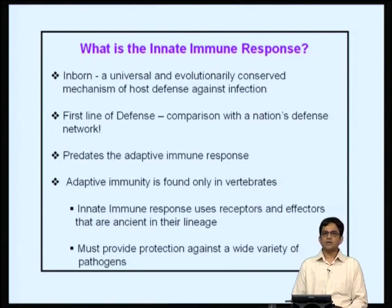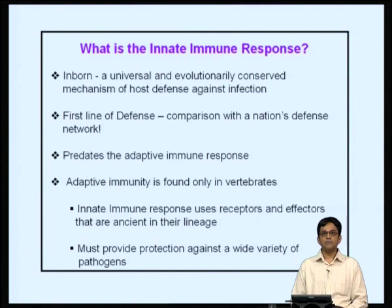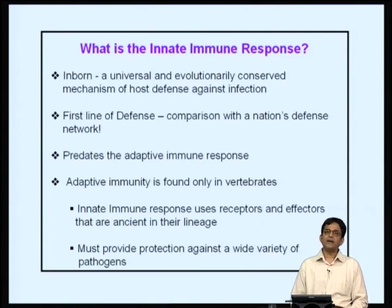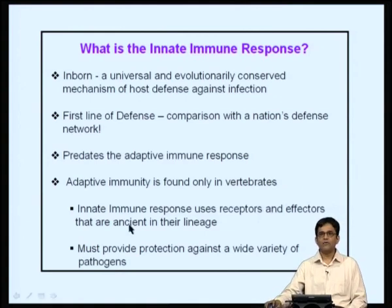The innate immune response predates the adaptive immune response, meaning it is evolutionarily conserved and is present in lower organisms — something the adaptive immune response is not. The adaptive immune response is present only in vertebrates. The innate immune response uses receptors and effectors that are ancient in their lineage, and they must provide protection against a wide variety of pathogens.